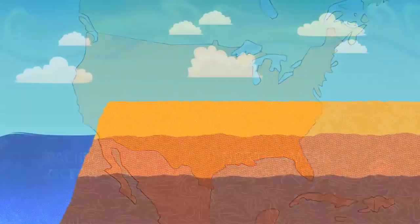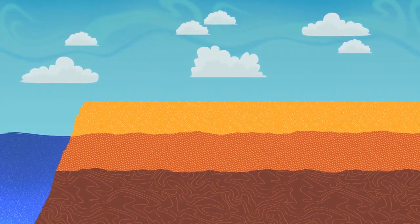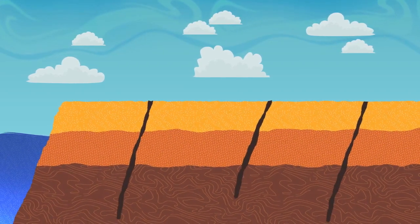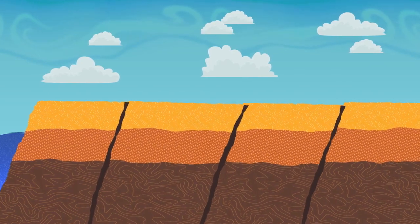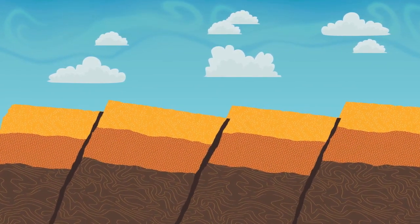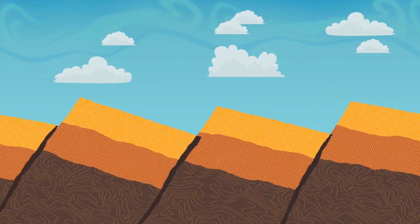As the crust spread out, it split along cracks that cut through the layers of rock. Geologists call those cracks faults. The land on one side of the fault slid down and formed our valleys, and the land on the other side slid up to form our mountains.